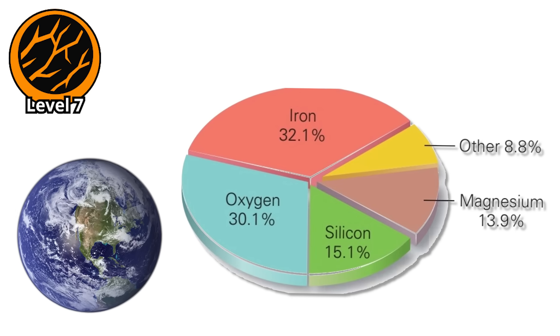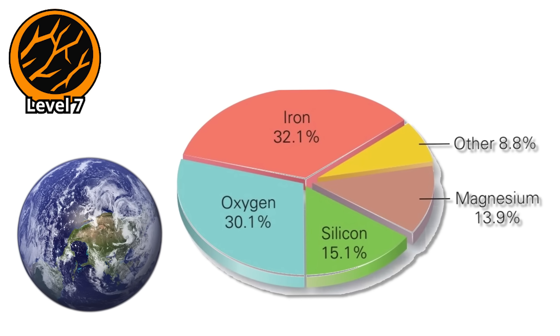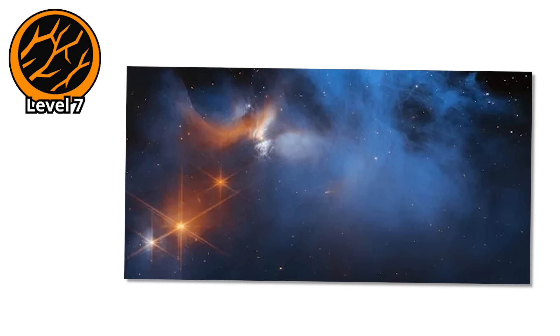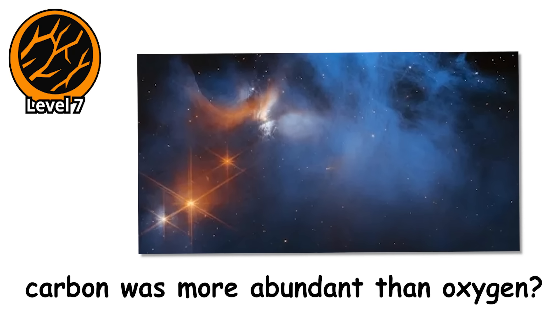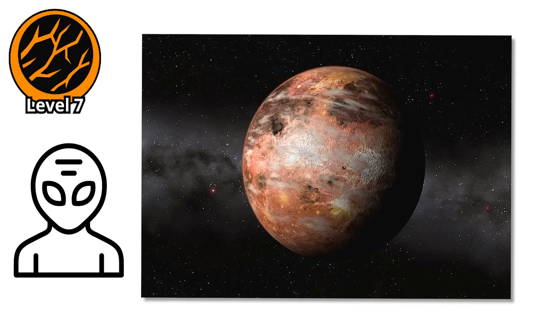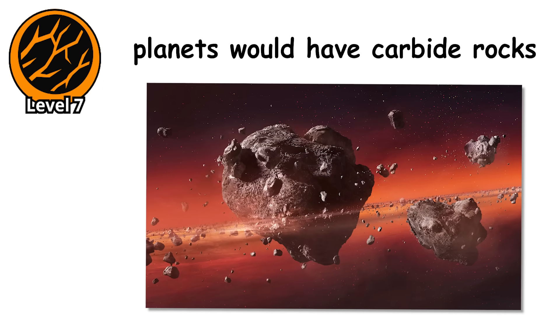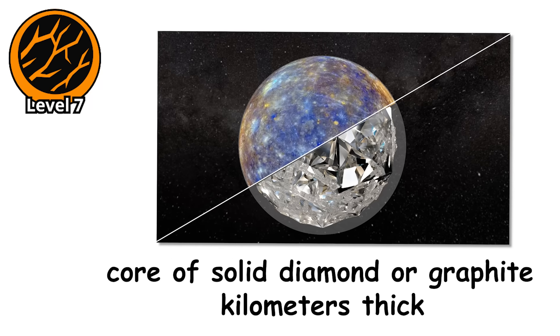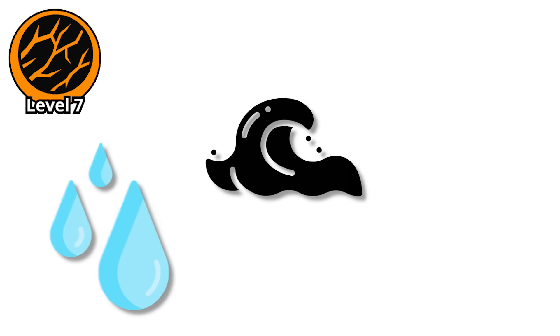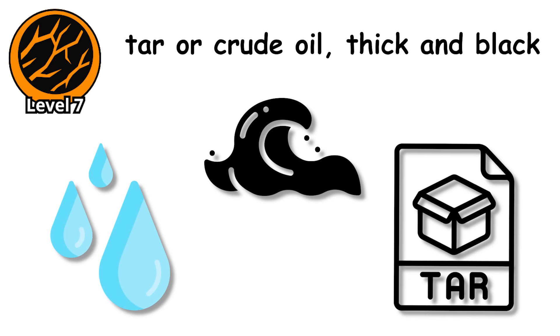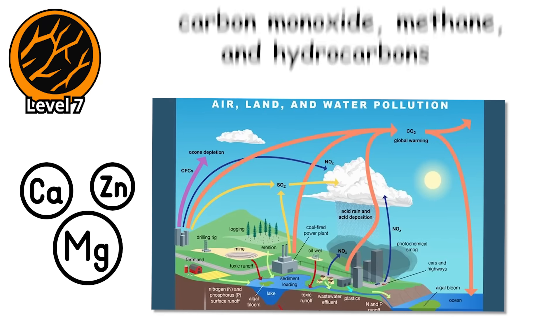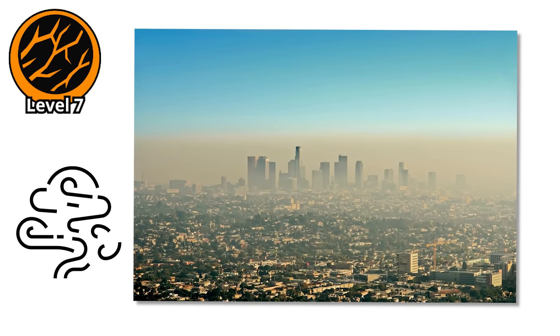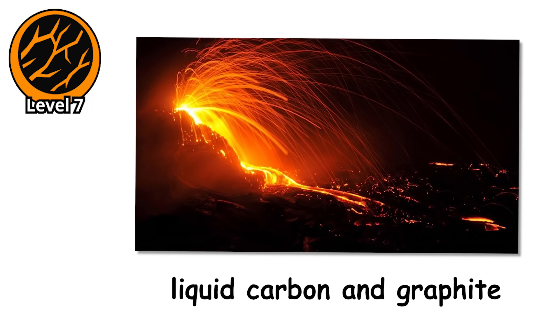Level 7. Earth is made mostly of silicate rocks, oxygen, iron, the standard planetary ingredients. But what if a planet formed in a region of space where carbon was more abundant than oxygen? You'd get a carbon planet, and it would be alien in the truest sense of the word. Instead of silicate minerals, these planets would have carbide rocks. Silicon carbide and titanium carbide make up the crust, hard and dark. Instead of a metal core, they might have a core of solid diamond or graphite, kilometers thick. If they had oceans, they wouldn't be water. They might be tar or crude oil, thick and black. The atmosphere of a carbon world could be filled with carbon monoxide, methane and hydrocarbons, creating a permanent smog. Lightning strikes would produce soot. Volcanoes would erupt with liquid carbon and graphite instead of basaltic lava.